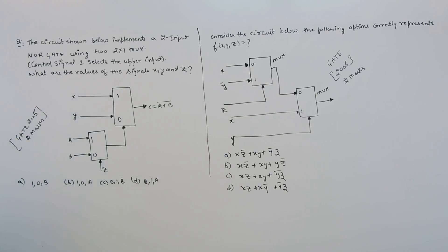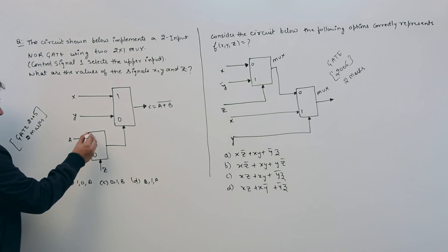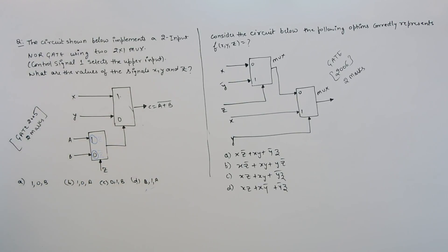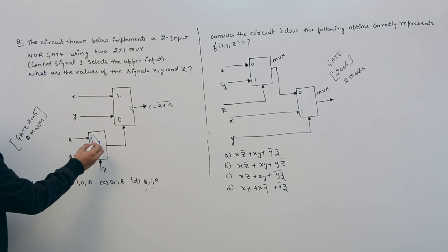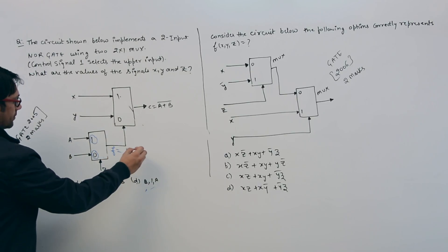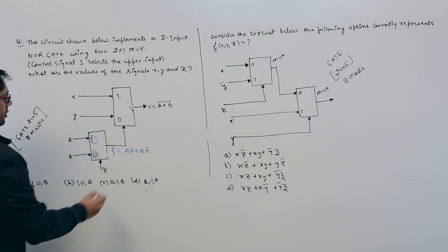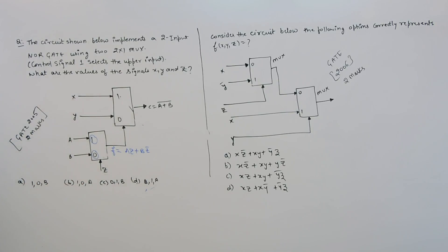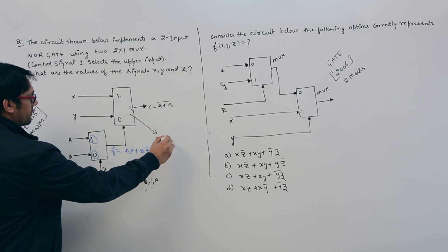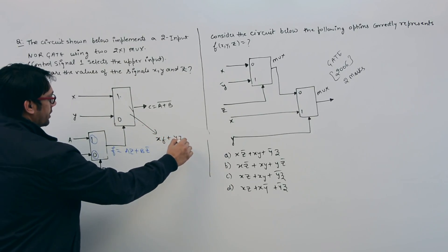To solve this, let us first identify the equation we are going to get. The upper input represents 1, meaning it represents Z, and the lower input is 0, meaning it represents Z complement. So this circuit represents a function F equal to A·Z plus B·Z complement. Therefore the final output is X·F plus Y·F complement.